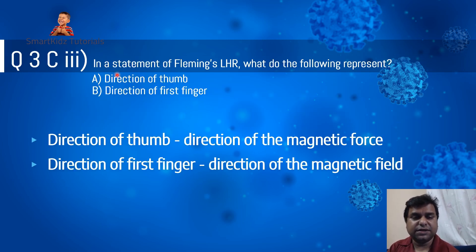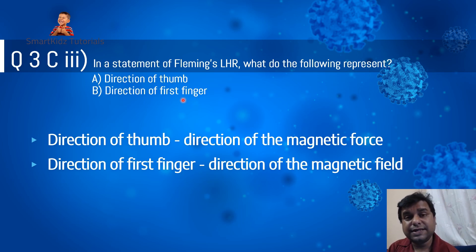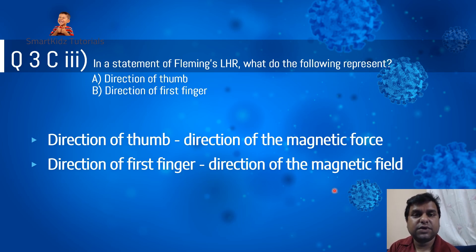Question 3C3: in Fleming's left hand rule, what do the thumb and first finger represent? The direction of the thumb represents the direction of the magnetic force, and the direction of the first finger (index finger) represents the direction of the magnetic field. The middle finger (third finger) represents the direction of current in the conductor. You are asked only for the two: thumb and first finger.